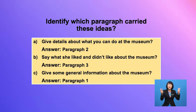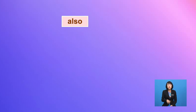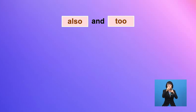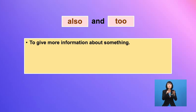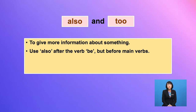Wow, good job Yusuf! Now let's look at these words: 'also' and 'too'. We use 'also' and 'too' to give more information about something. We use 'also' after the verb 'be', but before main verbs.